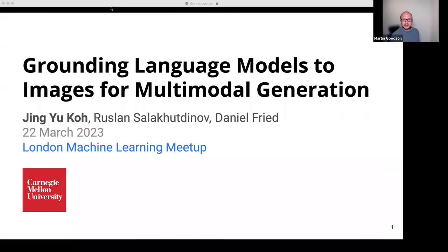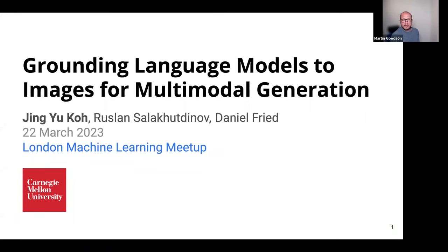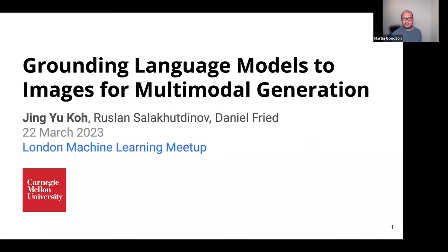Hi everyone, welcome to The Meetup. I'm Martin Goodson from Evolution.ai, who sponsored The Meetup. Today we have JY Coe from Carnegie Mellon talking to us about a really exciting paper about grounding language models to images for multimodal generation.